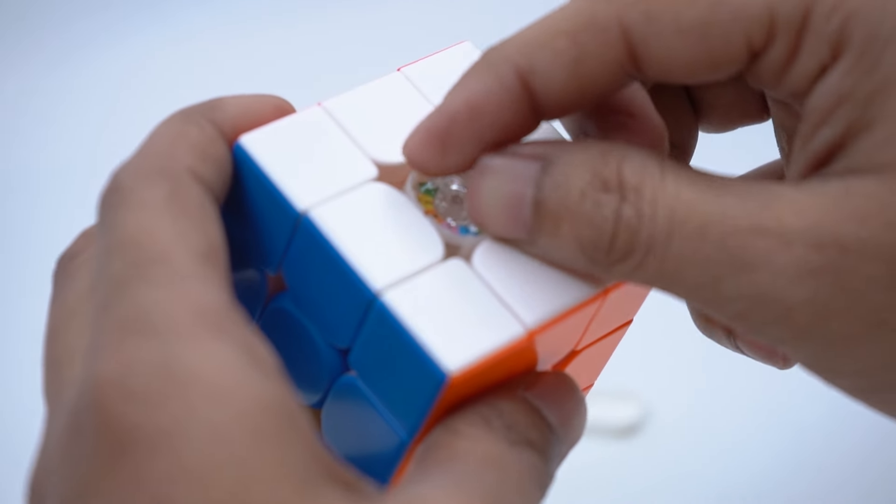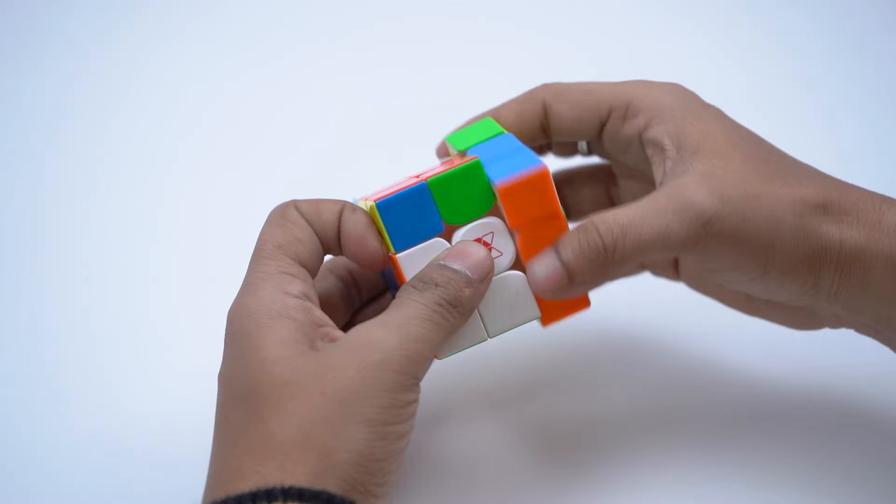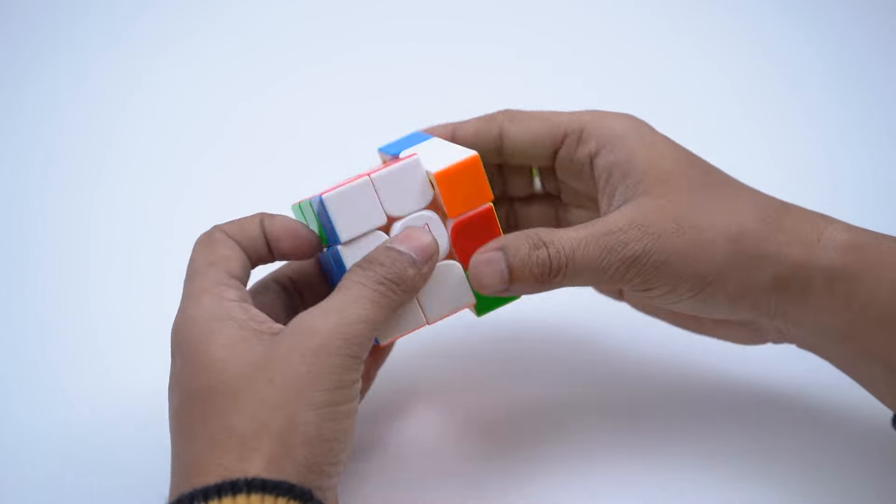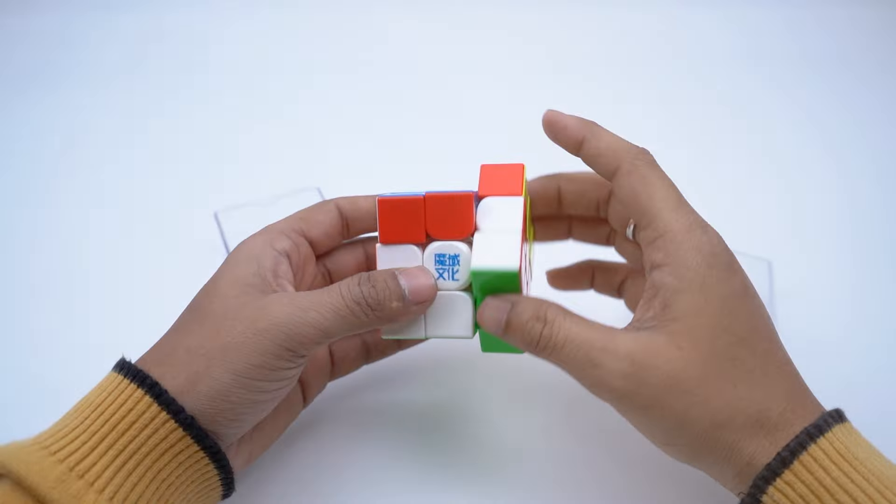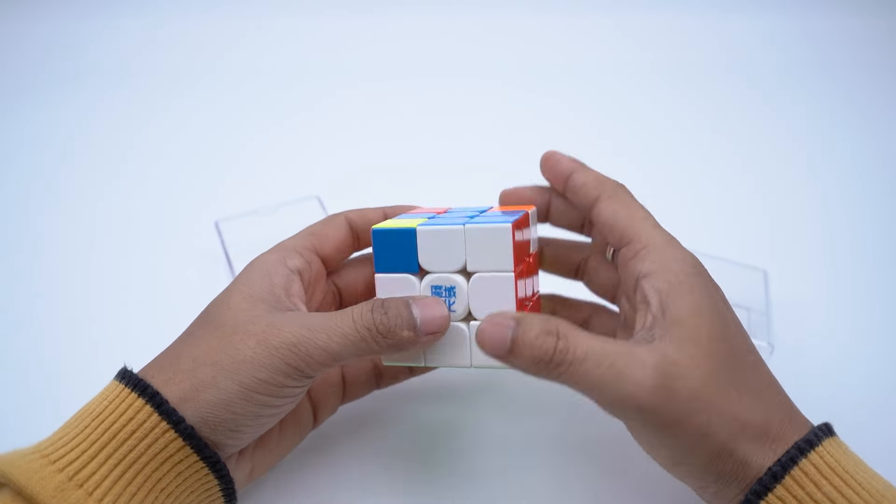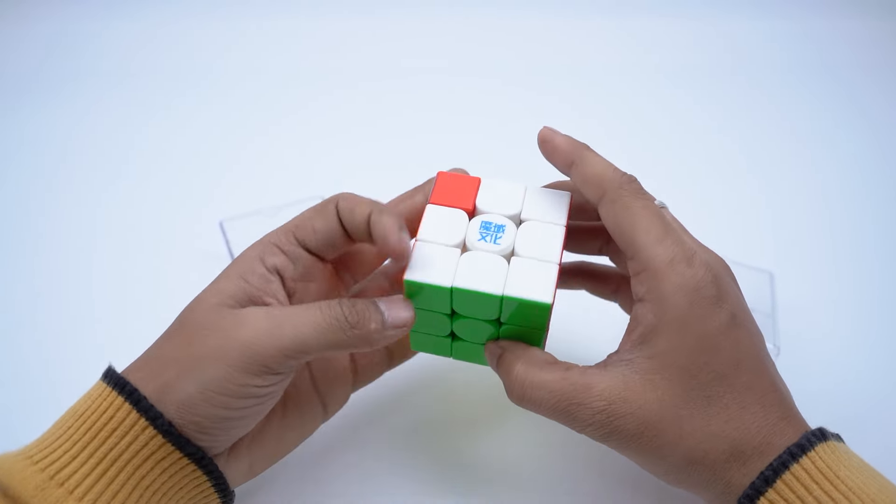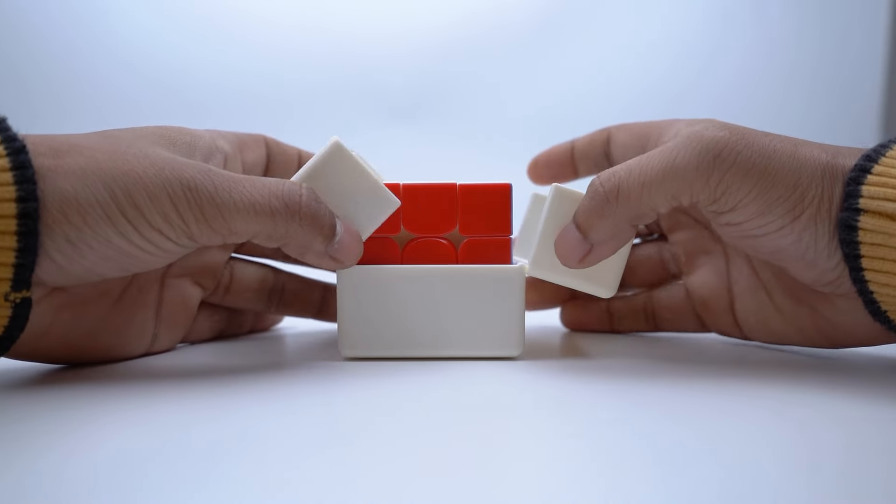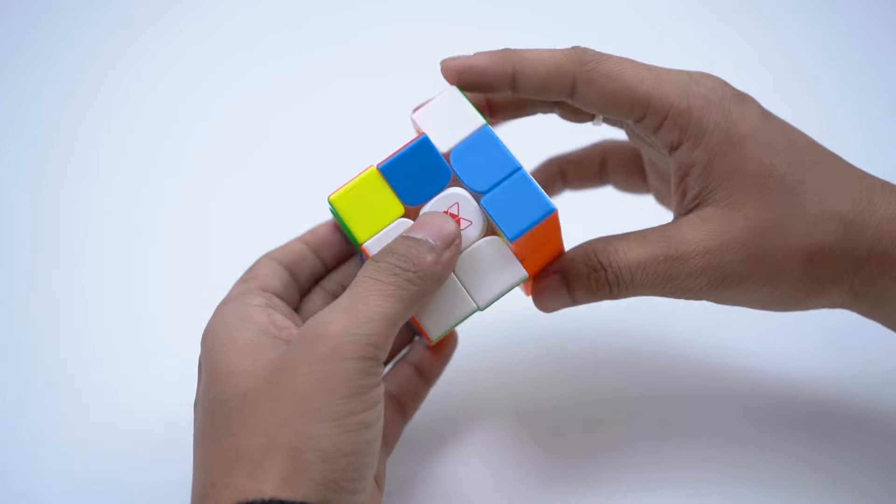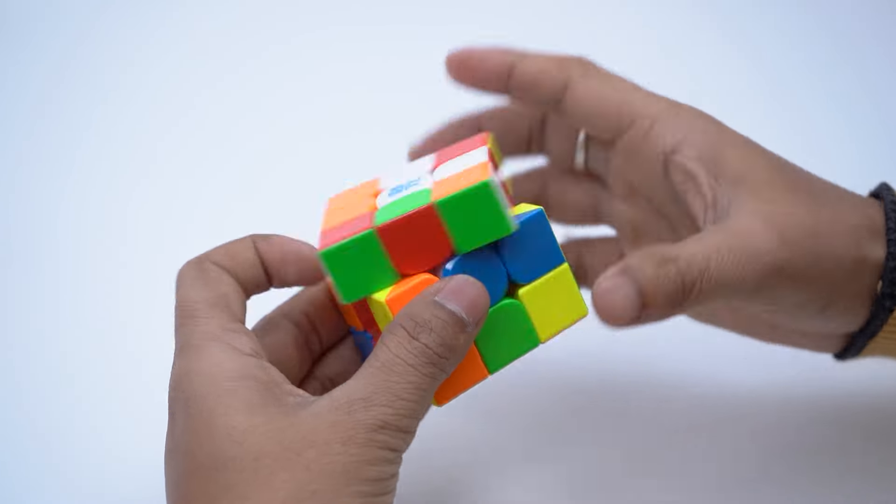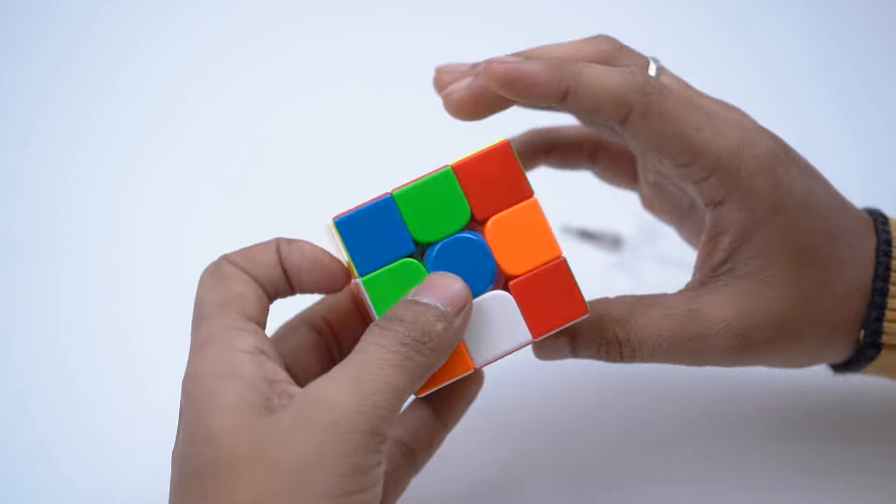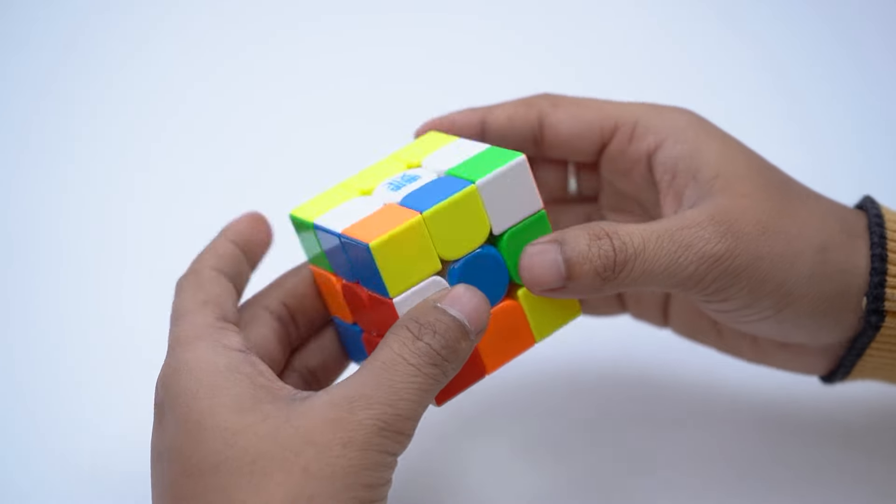After proper lubing and breaking in, the cube feels absolutely amazing to turn, especially as the Tornado V4 is much quieter and less irritating than the WRM V10, which has a very high-pitched clicky sound while turning. The build quality on the Tornado V4 flagship also feels much superior to the WRM V10, and with the Tornado V4 flagship priced similarly to the WRM V10, it's a strong competition.